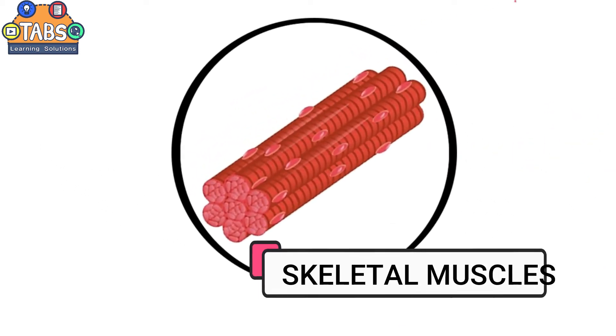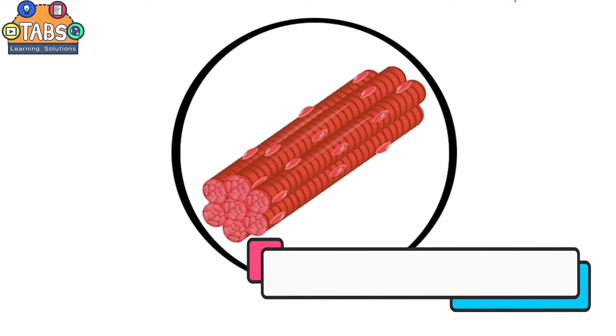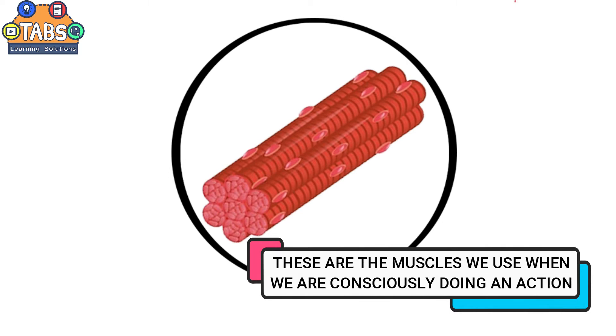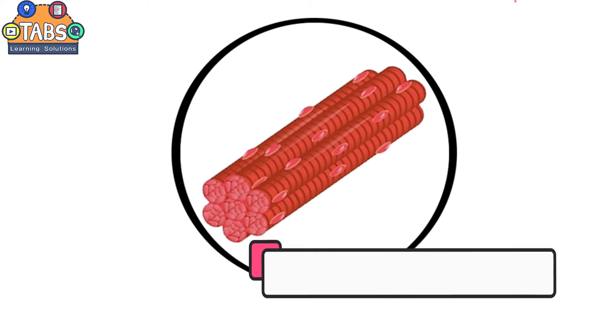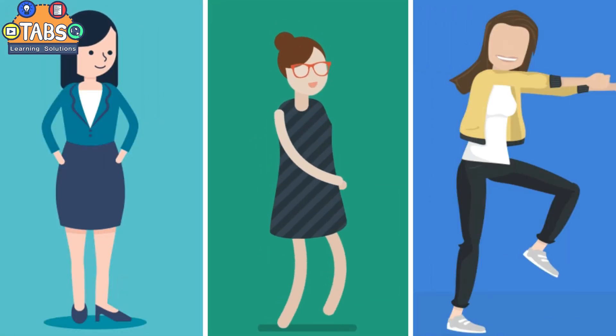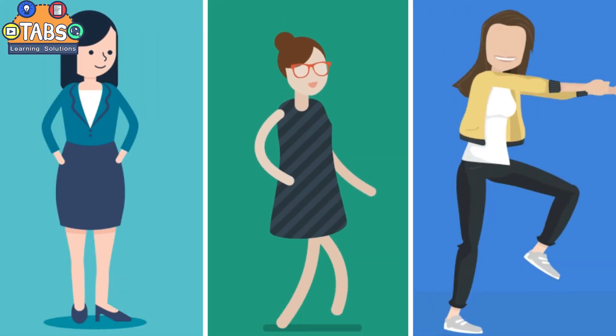The skeletal muscles are also called voluntary muscles because some of them can be consciously controlled. These are the muscles we use when we are consciously doing an action such as speaking, walking, or dancing.